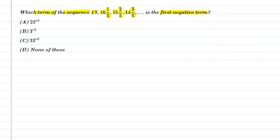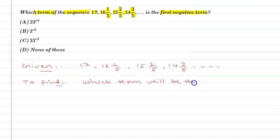So let's start. We have given a sequence 17, 16 1/5, and 15 2/5, and 14 3/5, and so on. And we have to find which term will be the first negative term.